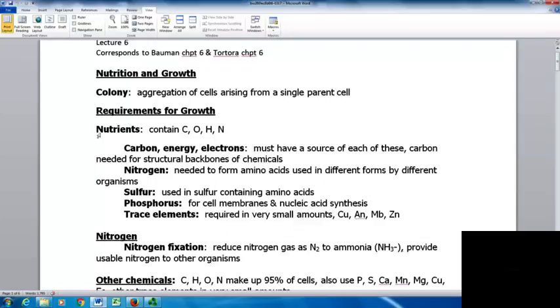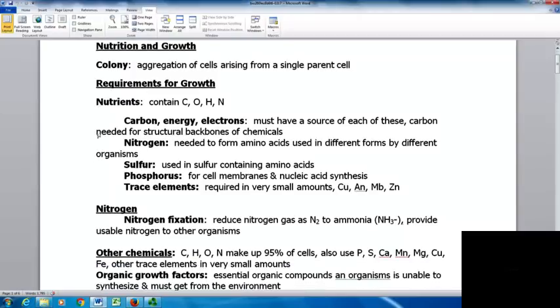Nutrients are going to contain carbon, oxygen, hydrogen, and nitrogen. A source of carbon, energy, and electrons is essential. They must have a source of each of these things. Carbon is needed for the structural backbones of all chemicals. Nitrogen is needed to form amino acids used in different forms by different organisms. Sulfur is important for sulfur-containing amino acids.